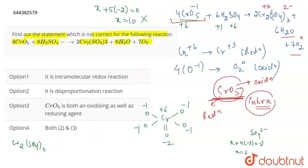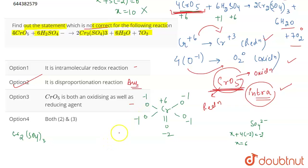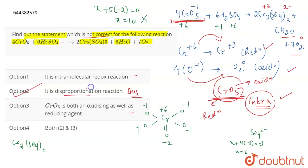The question asks for the statement which is not correct. The incorrect statement is option 2, which says it is a disproportionation reaction. This reaction is an intramolecular redox reaction — Cr is reduced from +6 to +3 and oxygen from CrO5 is oxidized to O2. The same compound acts as both oxidizing and reducing agent, but since the two different elements within the molecule are involved, it is intramolecular redox, not disproportionation. So option 2 is the correct answer.